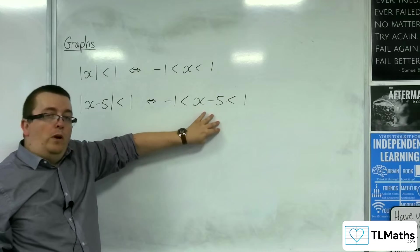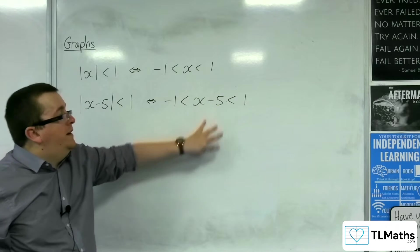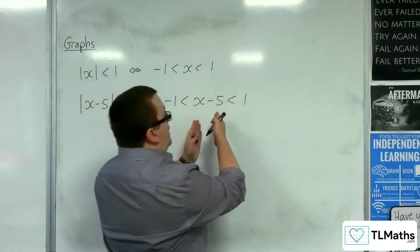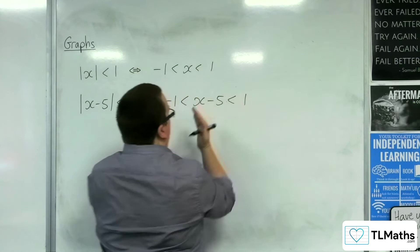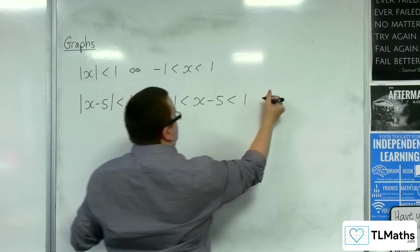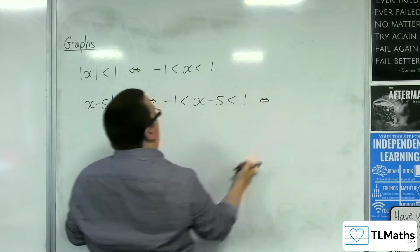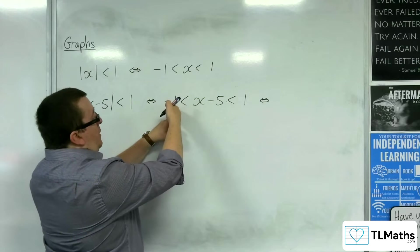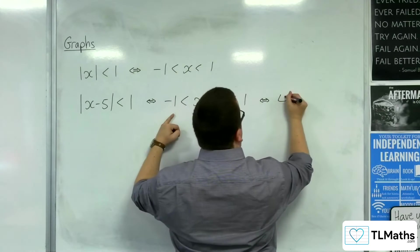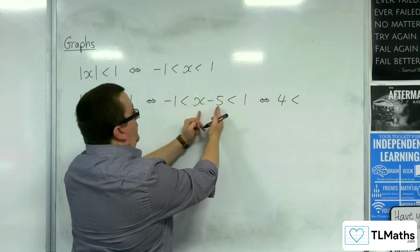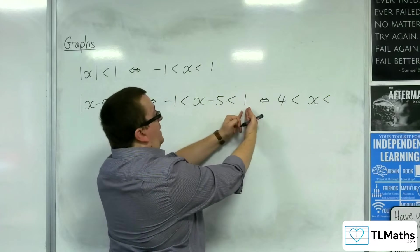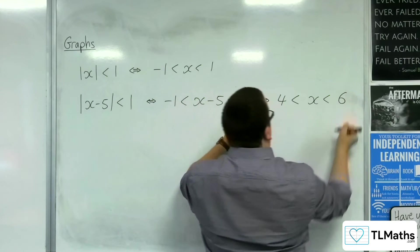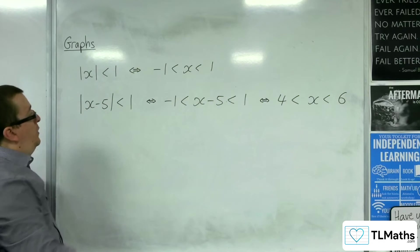Now, with this inequality here, what I can then do is I can add 5 to all three columns. And so this is the same as adding 5 to the minus 1, I get 4, the x minus 5 will just become x, and so the 1 gets added 5 and becomes 6.